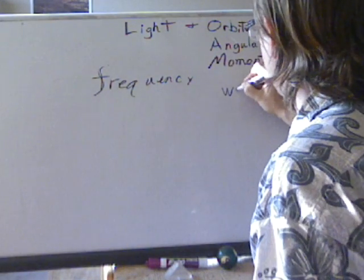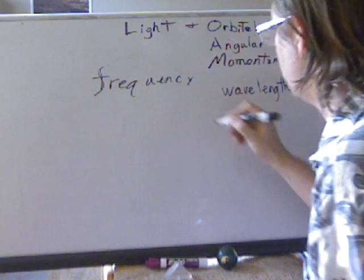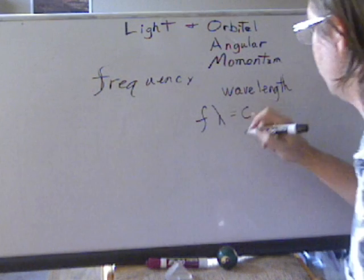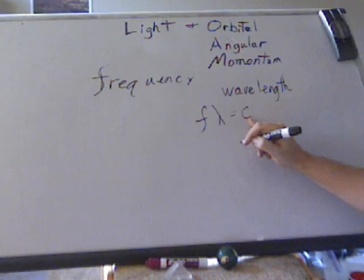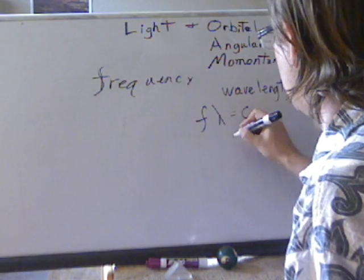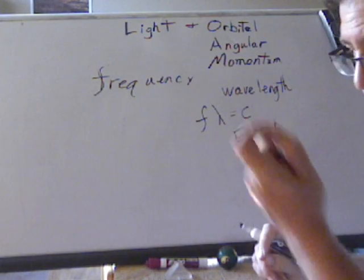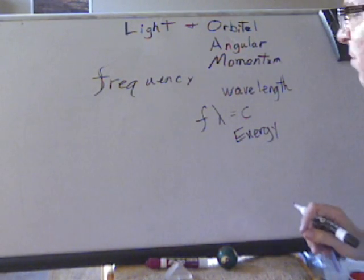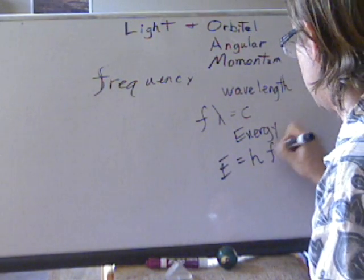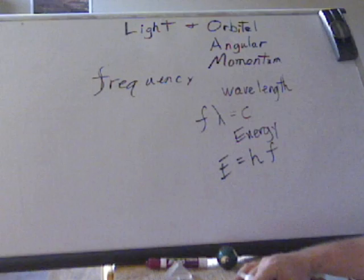We also have wavelengths, but that doesn't really tell us any additional information because frequency times wavelength always equals wave speed — that's the speed of light. So we don't really get any additional information out of that. We can take energy of a photon — a photon being a single bit of light — but that doesn't really tell us anything either because energy is just h times f, where h is Planck's constant. So if you know the frequency, you know the energy, and vice versa.